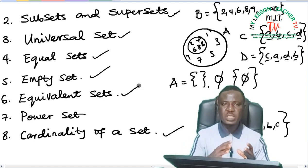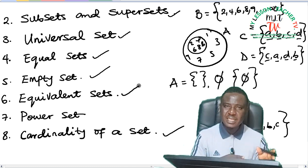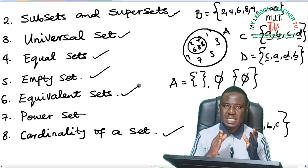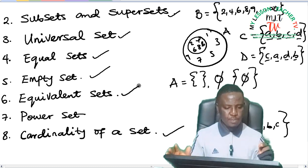Equivalent Set. Two sets are said to be equivalent when their cardinalities are the same, but the elements in those sets may not necessarily be the same. For example,